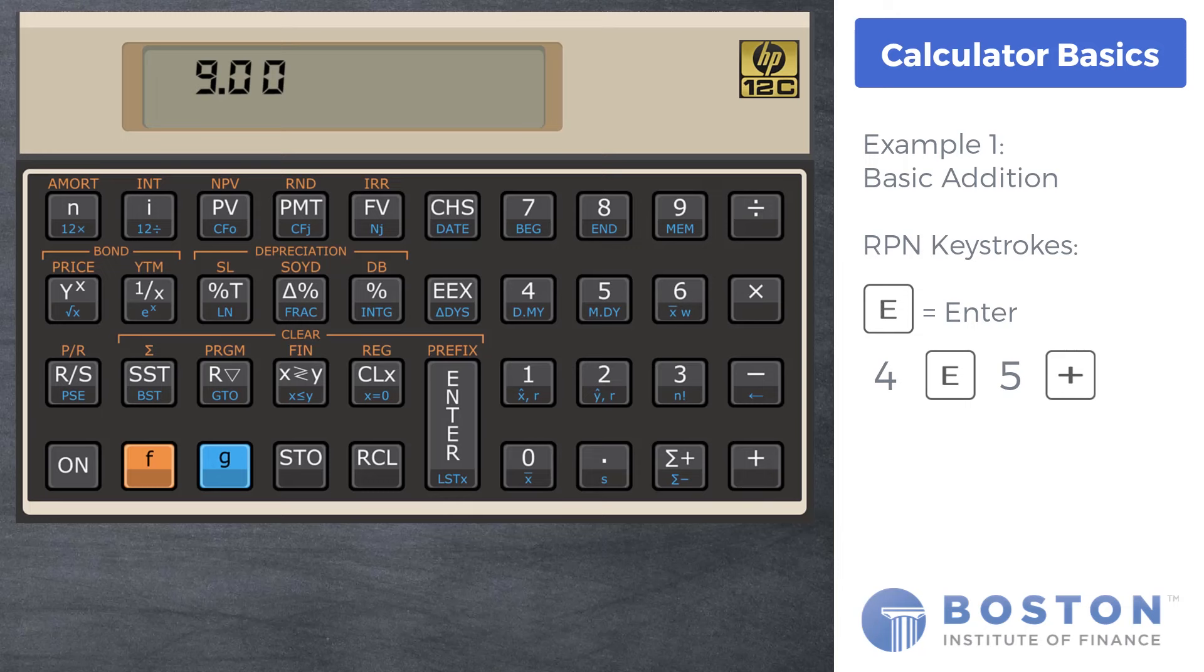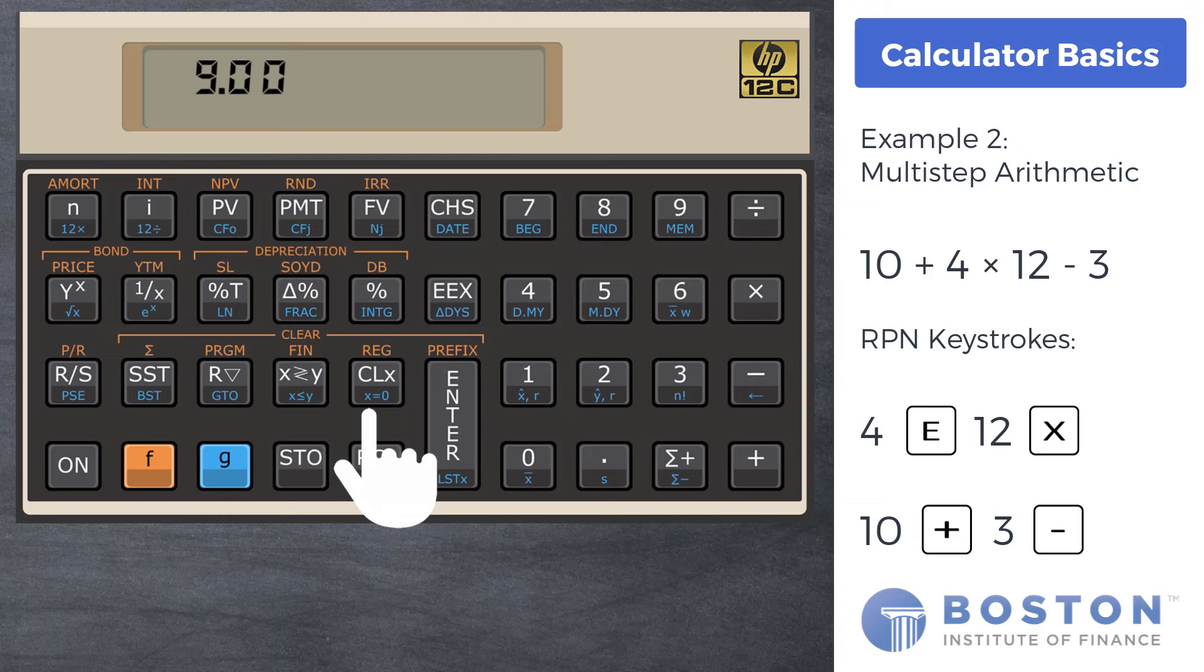Let's try a calculation that has more than one operation. Clear the display with the CLX key. Let's do this calculation: 10 + 4 × 12 - 3. From order of operations, multiplication needs to come first. We key in 4, enter 12, times key, 10 plus key, and then 3 minus key. Notice you do not need to press the enter key after every number.